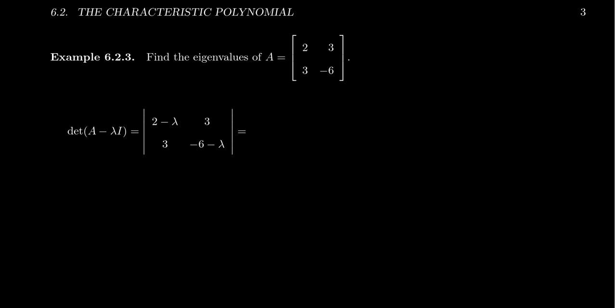As it's just a two by two determinant, we'll take the product minus the product of the diagonals. And so you get two minus lambda, multiply that by negative six minus lambda, and then we're going to subtract from that three times three. And so we are going to have to foil these first, outside, inside, last.